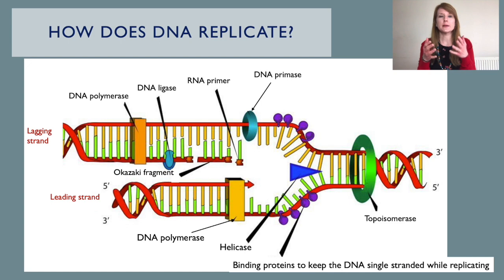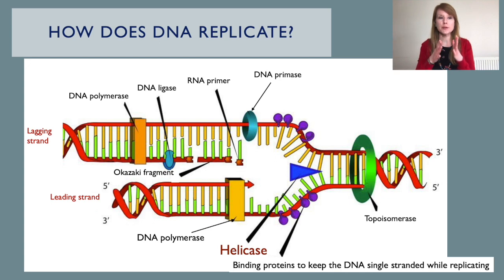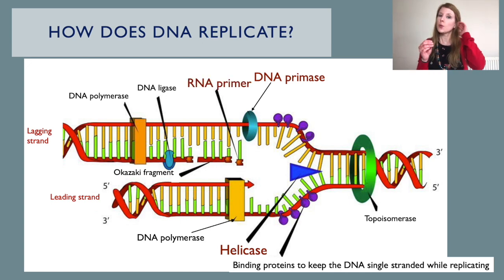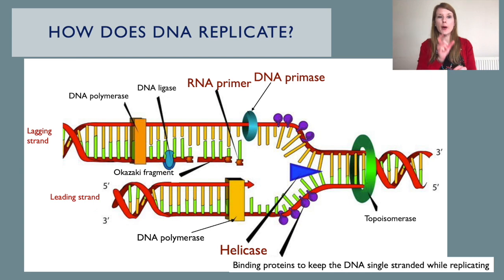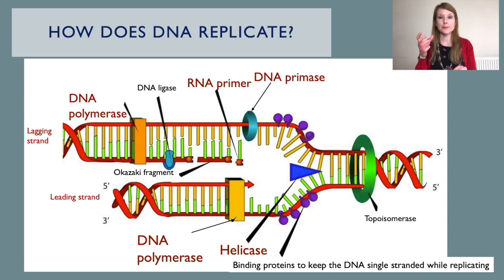An enzyme called DNA helicase does this, first by unwinding the DNA and then by breaking the hydrogen bonds between the bases. An enzyme called primase then makes primers, which are short stretches of DNA and RNA nucleotides. The primer binds to the DNA and this allows DNA polymerase, which is another enzyme, to start adding on nucleotides and joining them along their backbone by catalyzing condensation reactions, causing phosphodiester bonds to form.